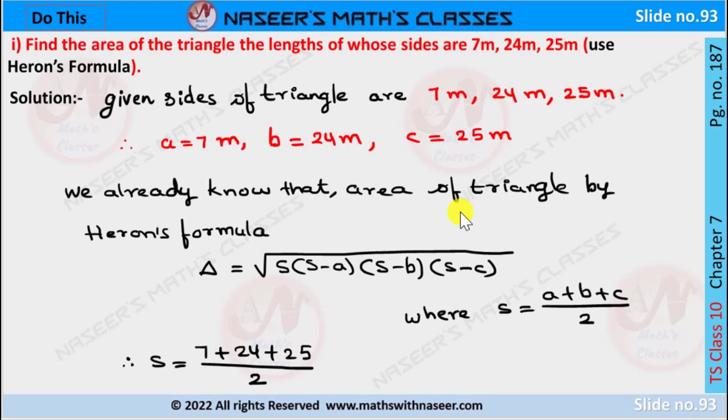We already know that the area of the triangle by Heron's formula is defined as Δ equals square root of S(S-A)(S-B)(S-C), where S equals (A+B+C)/2. So here we find S.